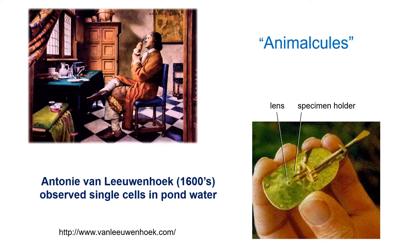Anthony Van Leeuwenhoek in the 1600s worked with very simple little microscopes that look like a tiny violin, with a tiny lens able to magnify images 300 times. He was the first person we know of to see bacteria. Bacteria had been around for 3.8 billion years, and this guy was able to see them for the very first time — that's pretty cool.